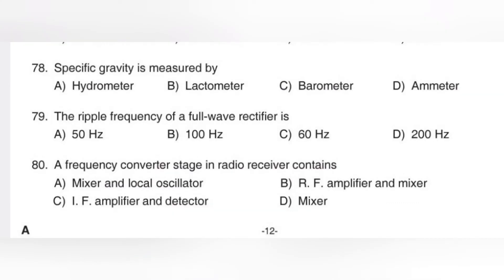Specific gravity is measured by a hydrometer. A lactometer is used for milk. A barometer measures atmospheric pressure. An ammeter measures current. Specific gravity is measured by a hydrometer.